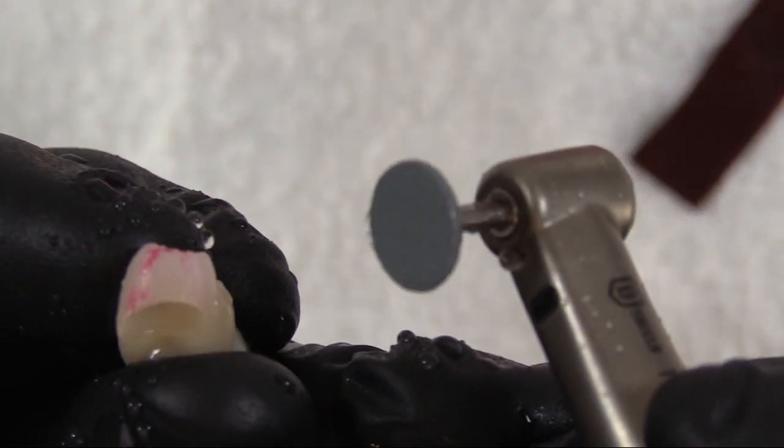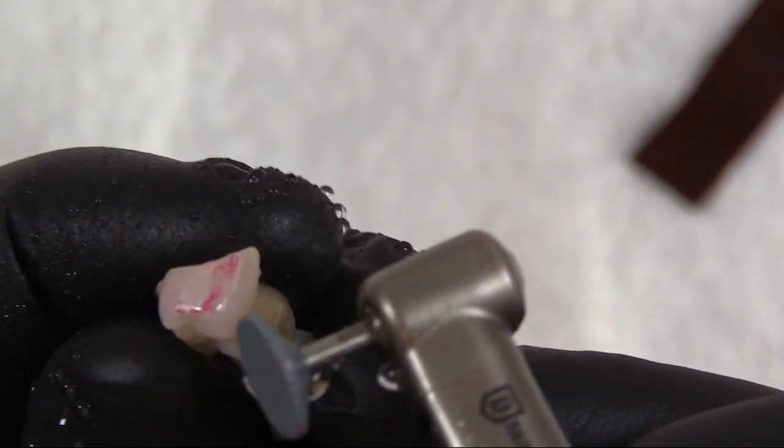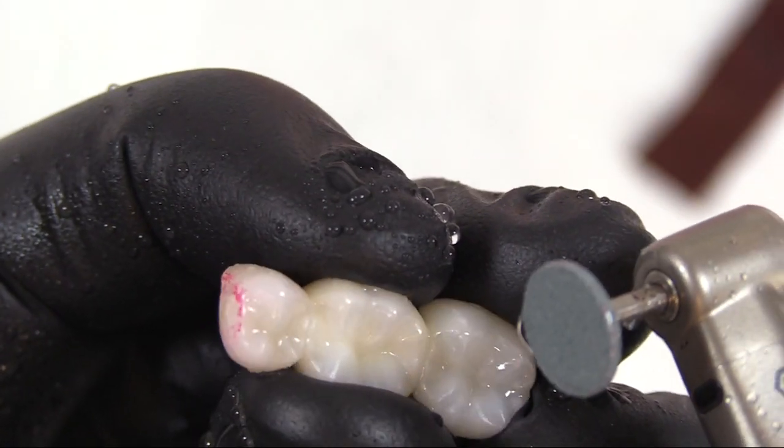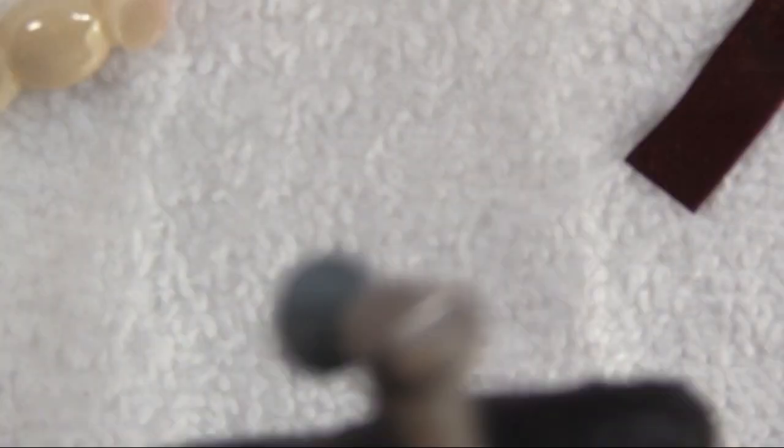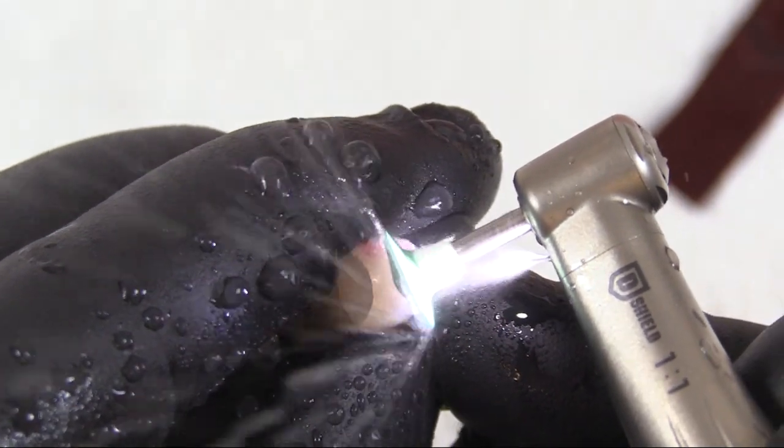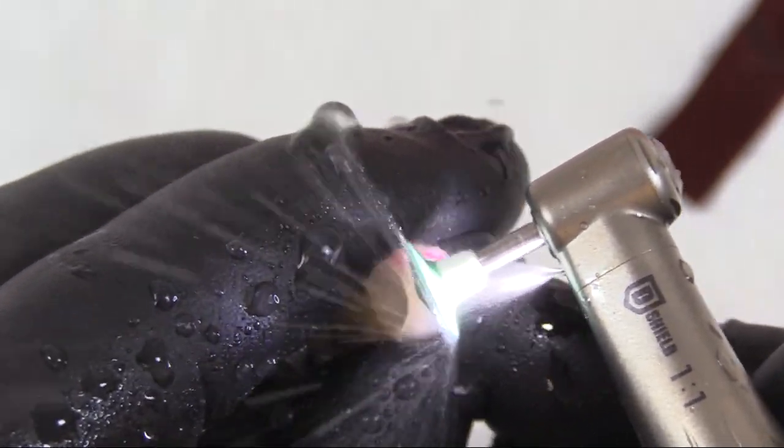Now it's quite rough, and this burr is only used for extensive reduction. Your lab should probably use this, as when you receive it from the lab, it should be pretty much spot on or close to. If you have to use this clinically, you want to follow up with the green medium grit one. Under water, you're going to polish that surface under irrigation and keep it cool.